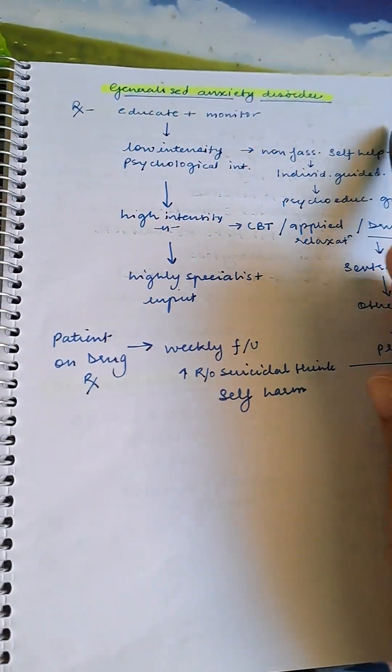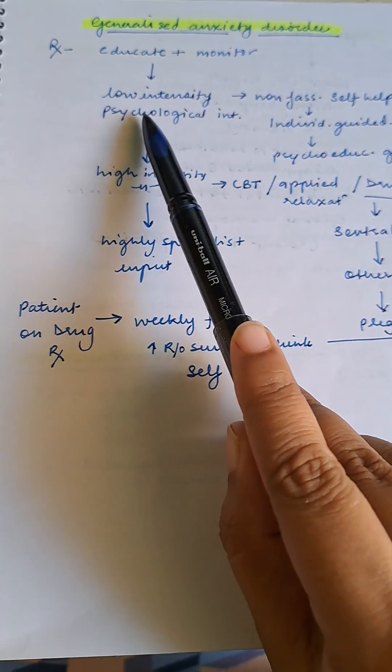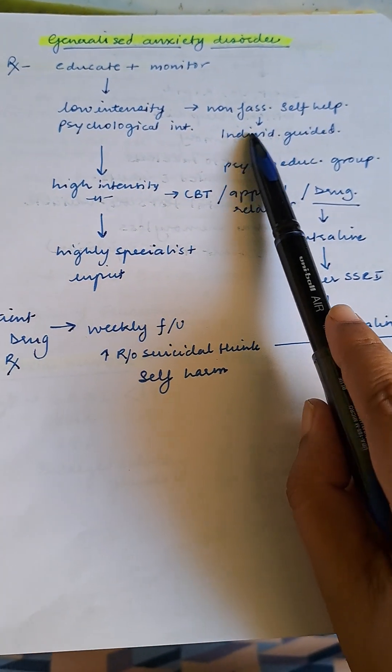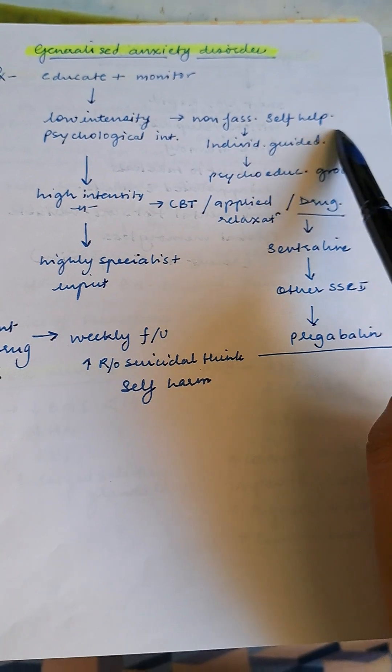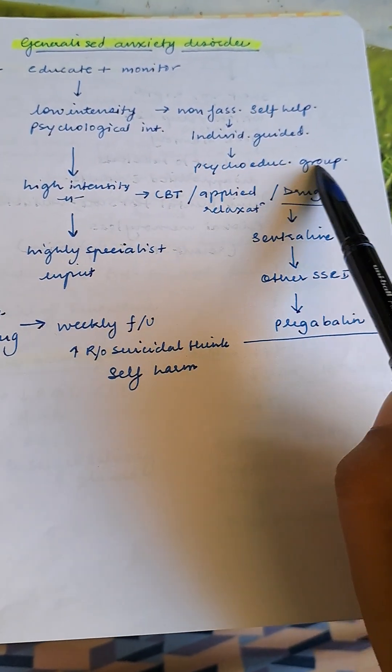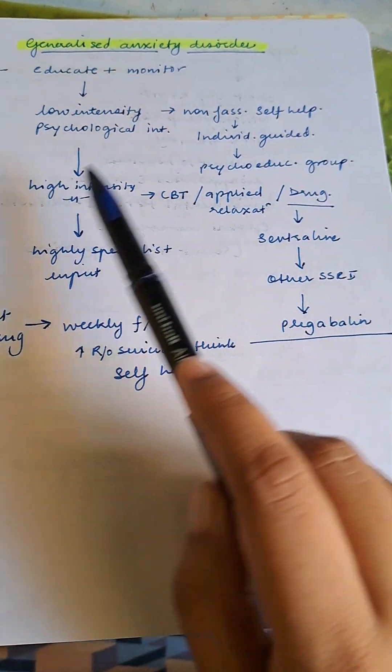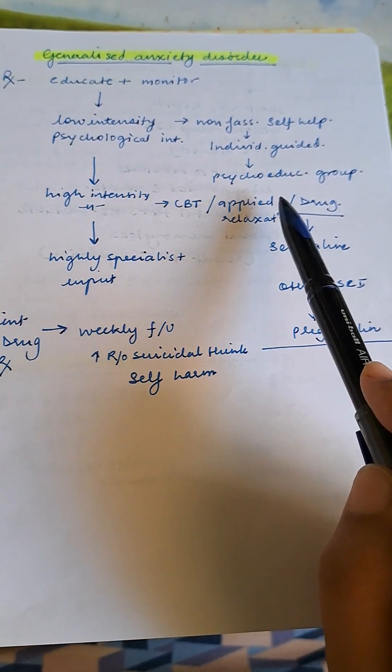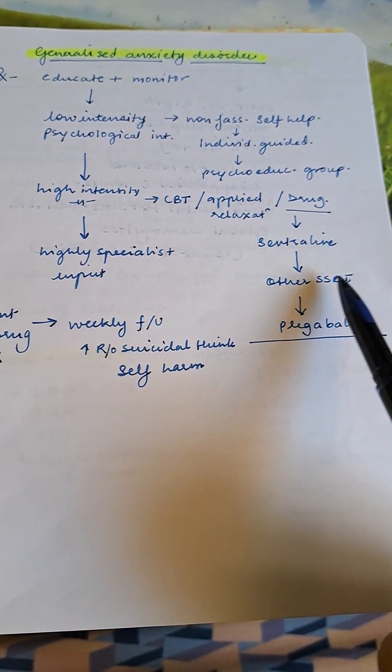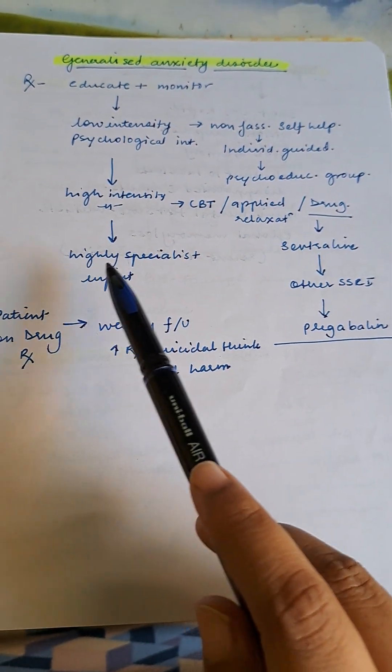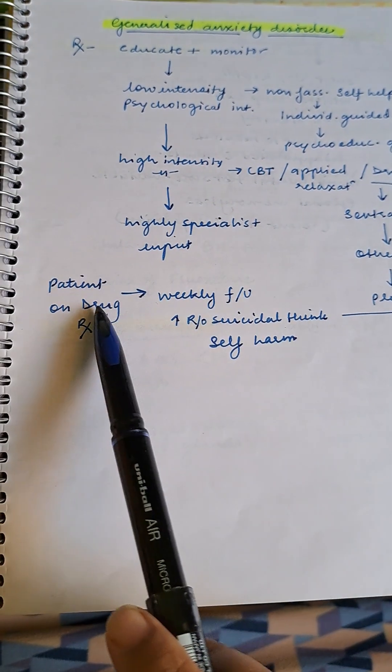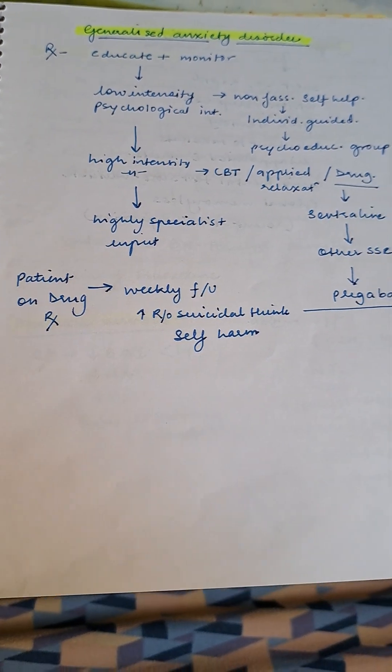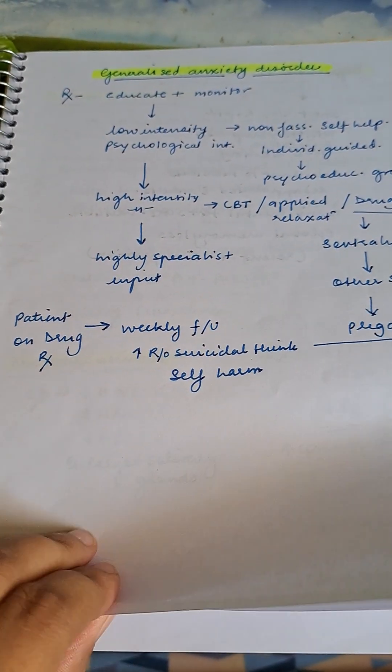Generalized anxiety disorder treatment. First, educate and monitor. Then low-intensity psychological intervention: self-help, individual guided psychoeducation, or group sessions. If this fails, high-intensity psychological intervention with CBT, applied relaxation, or drugs like sertraline and other SSRIs. You can give pregabalin. If ineffective, then high specialist input. Patients on drugs need weekly follow-up because there's increased risk of suicidal thinking and self-harm, not only in GAD but in any case.